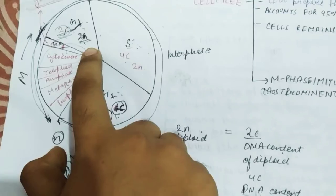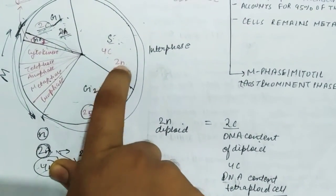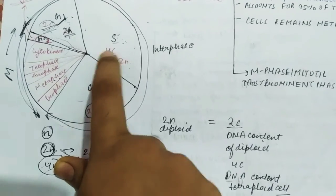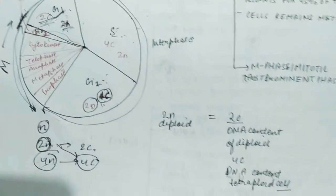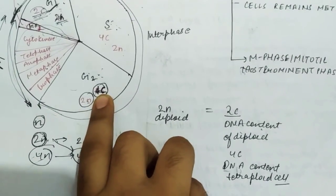Let me tell you about ploidy. In G1, ploidy is 2N and DNA content is 2C. In S phase, DNA content doubles to 4C, but its ploidy remains 2N. In G2 phase, ploidy is 2N and DNA content is 4C.